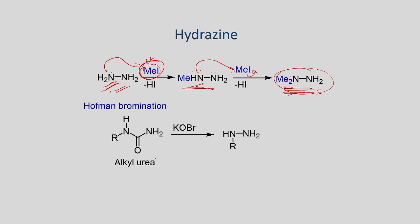The next example involves the reaction of an alkyl urea with potassium hydroxide and Br2 to give the monoalkyl hydrazine as the product through Hoffman bromination.